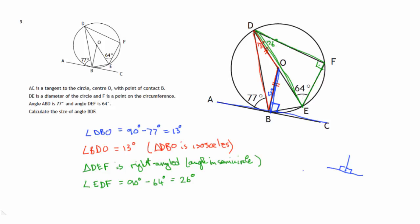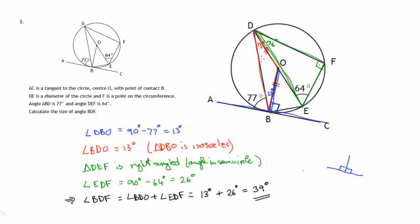So we've now got our two component angles of angle BDF. Angle BDF equals angle BDO plus angle EDF — that's 13 degrees from the isosceles triangle plus 26 degrees from the right-angled triangle — giving us 39 degrees for that large angle.